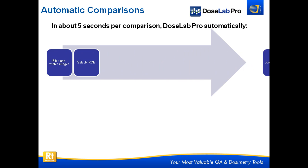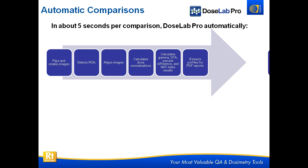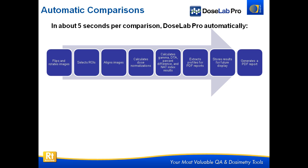Automatic comparisons are also very popular. We've taken the original DoseLab dose comparison interface developed almost 10 years ago and made all these steps happen automatically. When you start an automatic comparison, DoseLab will flip and rotate the images, select your ROI, align the two images and compare them to any fiducials you have, calculates the dose normalization, gamma, DTA, percent difference, and NAND index, extracts profiles for PDF reports, stores the results for future display or analysis in PQI analytics, and generates a PDF report — all of this in about five seconds.